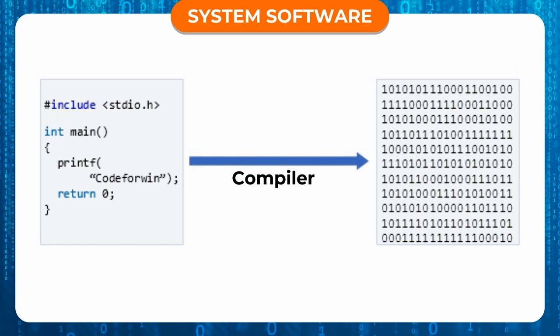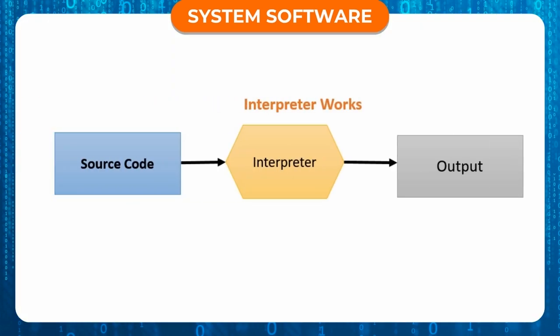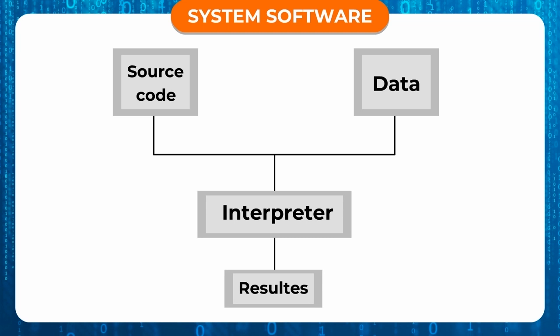If the original program is altered, the program needs to be recompiled. Interpreter also translates programs written in high-level language into machine language, but it translates each instruction or line of the program as the program is executed.